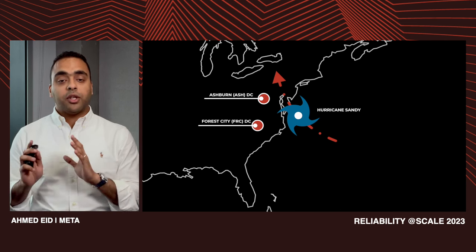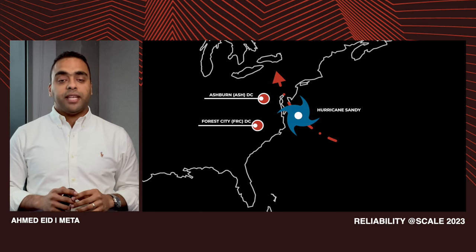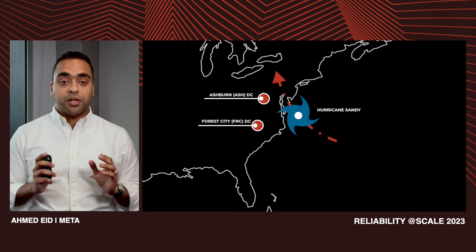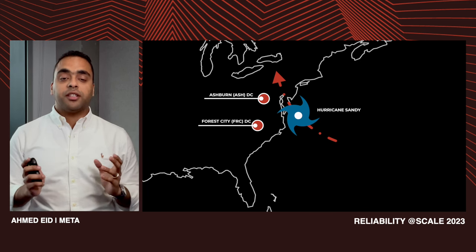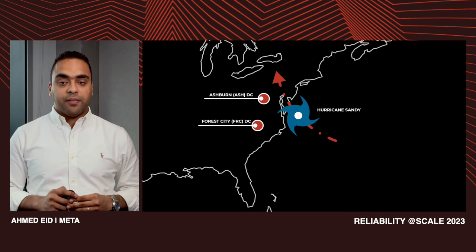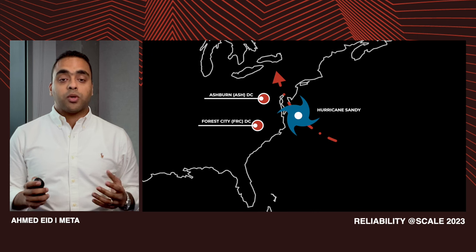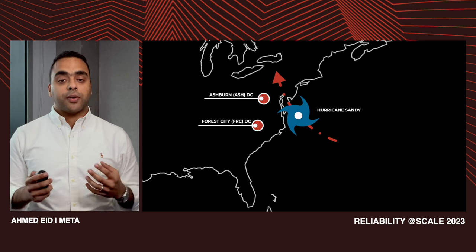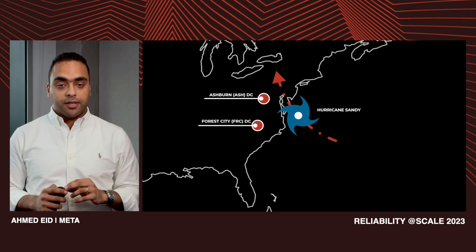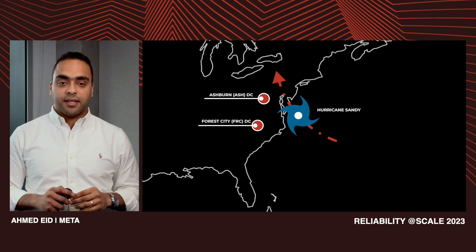Forest City contained all our database primaries. At that time, Meta was distributed across only three major data centers and we were not prepared for the loss of an entire region. With plans to grow our infrastructure, the likelihood of a regional disaster happening was growing, and we started to ask ourselves if we could run Meta products without one of our regions — and the disaster recovery program was born as a result.